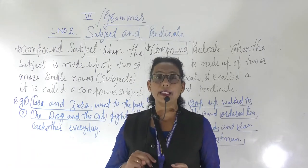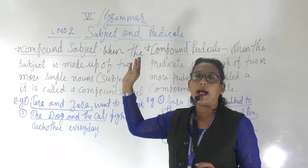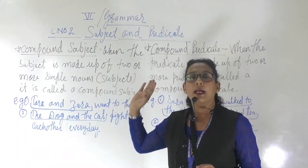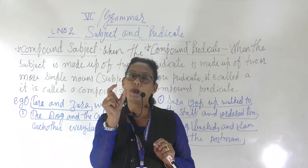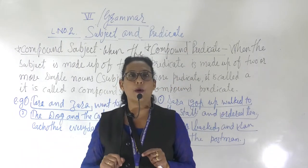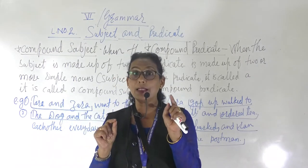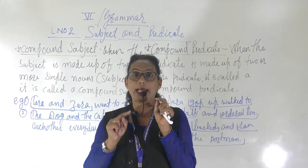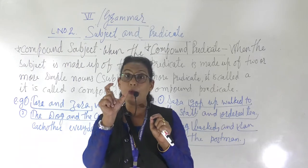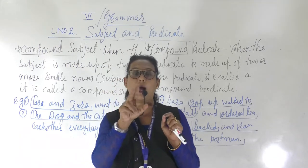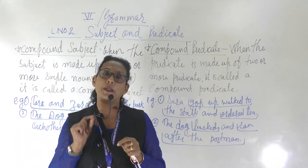Now, in this lesson, the second part is compound subject and compound predicate. Compound means two names or subjects together. For example, timetable has two words — time and table. Dining table has dining and table. When two nouns or subjects come together, it is called the compound subject.